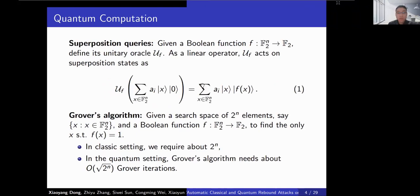In quantum computation, we can make superposition queries with a quantum oracle. For example, U_F acts on a superposition and outputs a superposition. Grover's algorithm is a quantum search method that achieves a square root speedup over classical search.